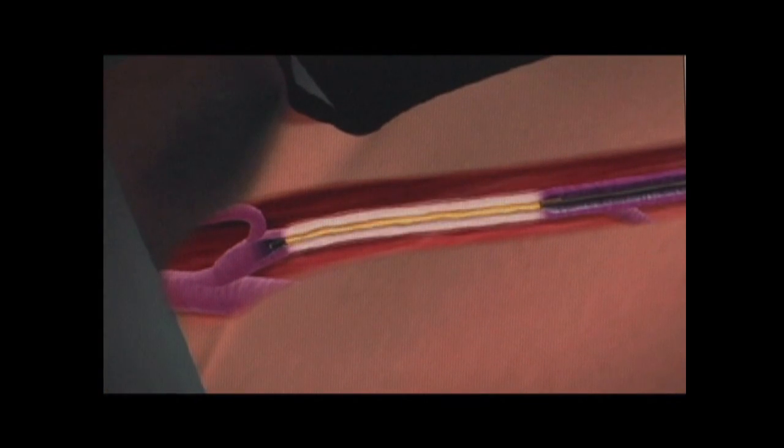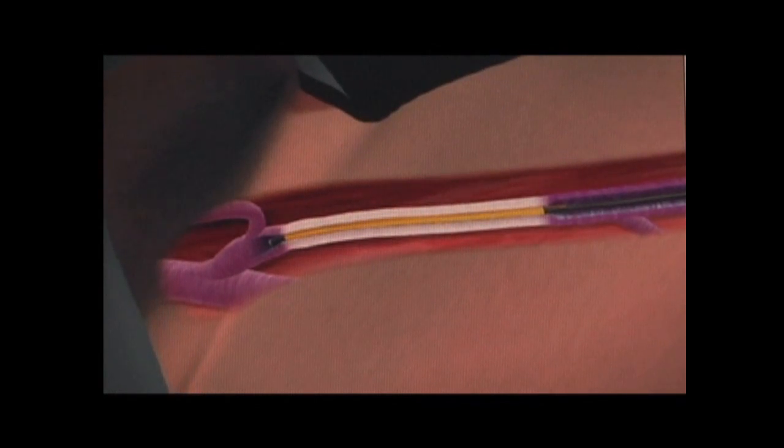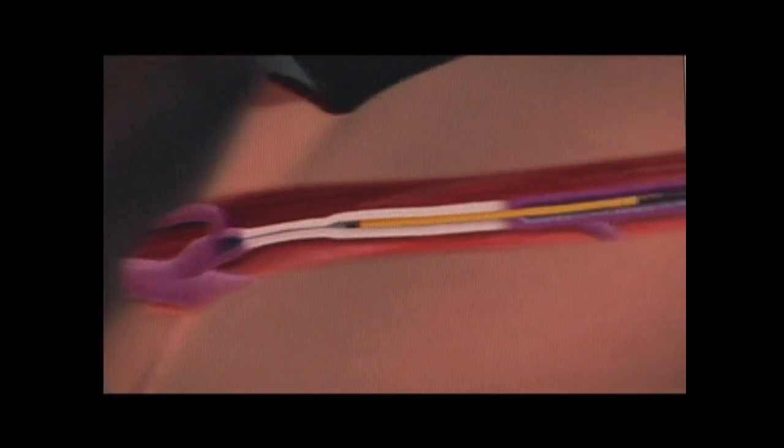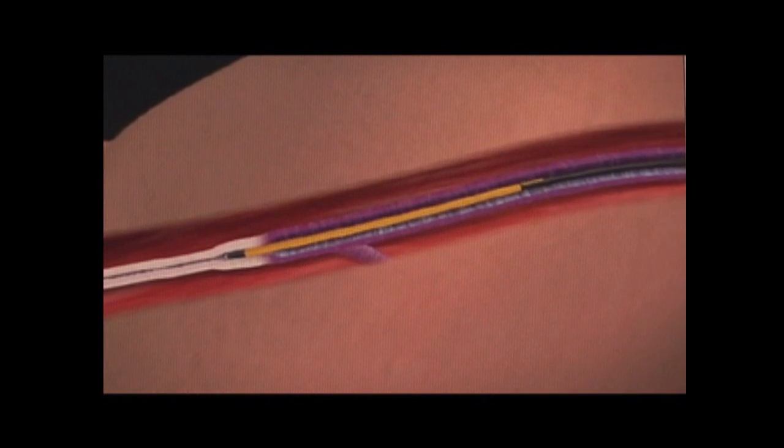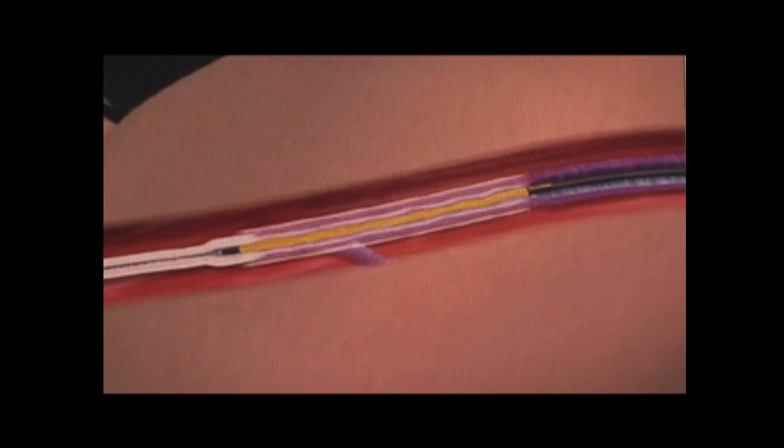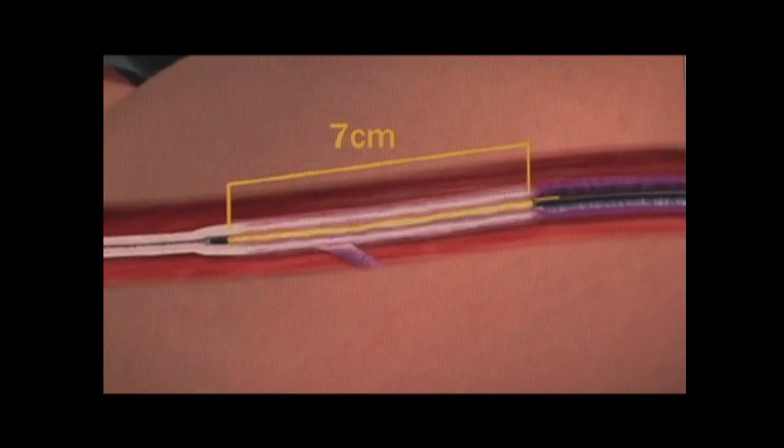The catheter energy is then applied, heating the vein closed. The catheter length is 7 cm, and after the initial segment is sealed for 40 seconds at 248 degrees Fahrenheit, it has moved further down towards the leg 7 cm so that there's a small overlap.